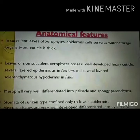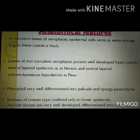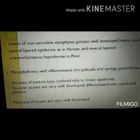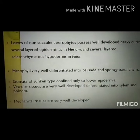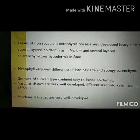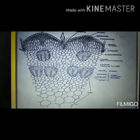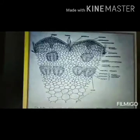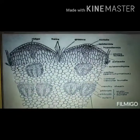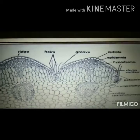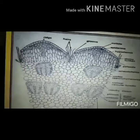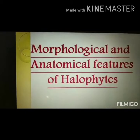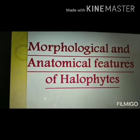Leaves of xerophytes are usually non-circinate with well-developed xerophytic features and a heavy cuticle, as in Nerium. The mesophyll is differentiated into palisade and spongy tissues, and stomata are sunken type. Mechanical tissues are well developed compared with hydrophytes. This cross-section of the stem or needle of Casuarina shows sunken stomata, thick cuticle, epidermal layers, and the presence of pith.